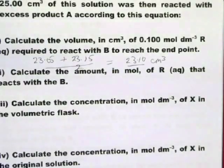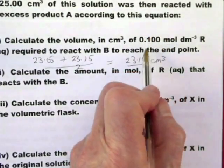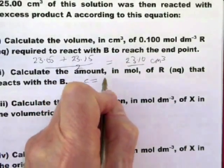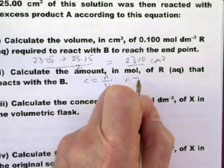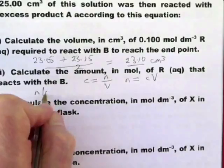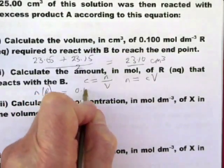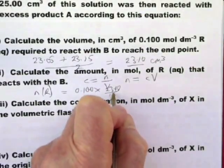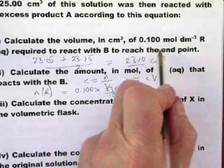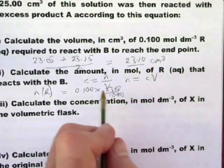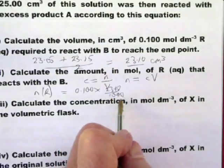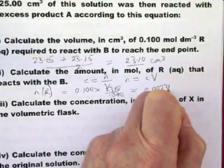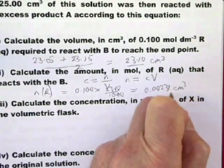Calculate the amount in moles of R that reacts with B. Well, the good thing is that this tells you everything you need to know. There is the concentration of R, and there is the volume of R that has been used. And we're using the equation C equals N over V, and therefore N equals C V, and therefore the N of R, the number of moles of R equals the concentration of 0.100 times the volume, which is 23.1 divided by 1,000. And the reason we use 1,000 is because this is measured in centimeters cubed. That's measured in decimeters cubed. So you've got to convert one into the other and we convert the centimeters cubed into decimeters cubed by dividing by 1,000. And that equals 0.00231 centimeters cubed.